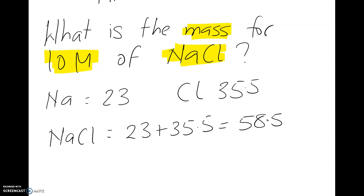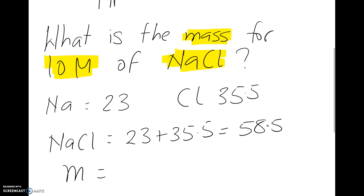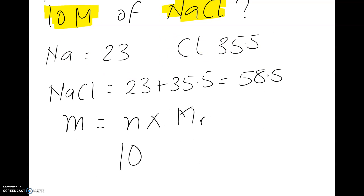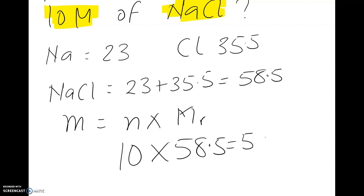So NaCl is equal to 23 plus 35.5, which gives you a total of 58.5. Now that I know my relative formula mass, the formula for mass is: mass equals number of moles times molar mass. N is 10 and Mr is 58.5, so 58.5 times 10 gives you 585 grams.